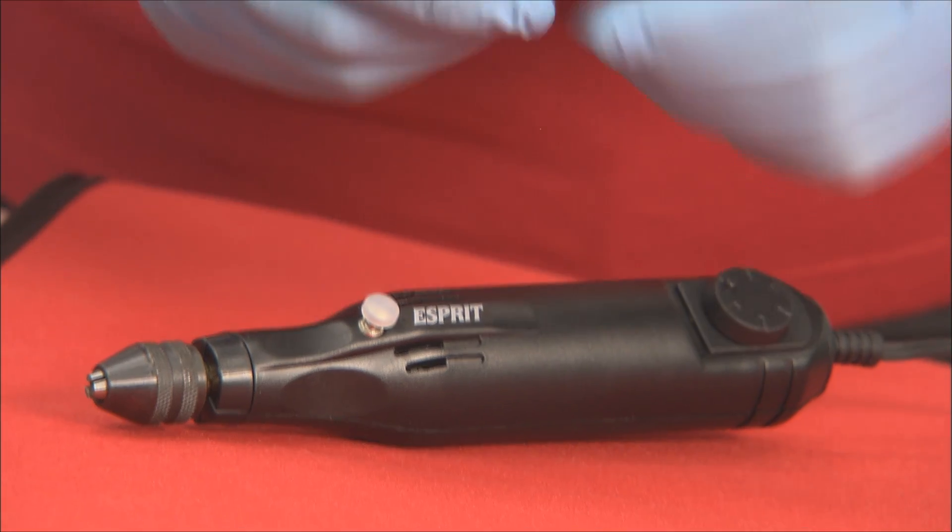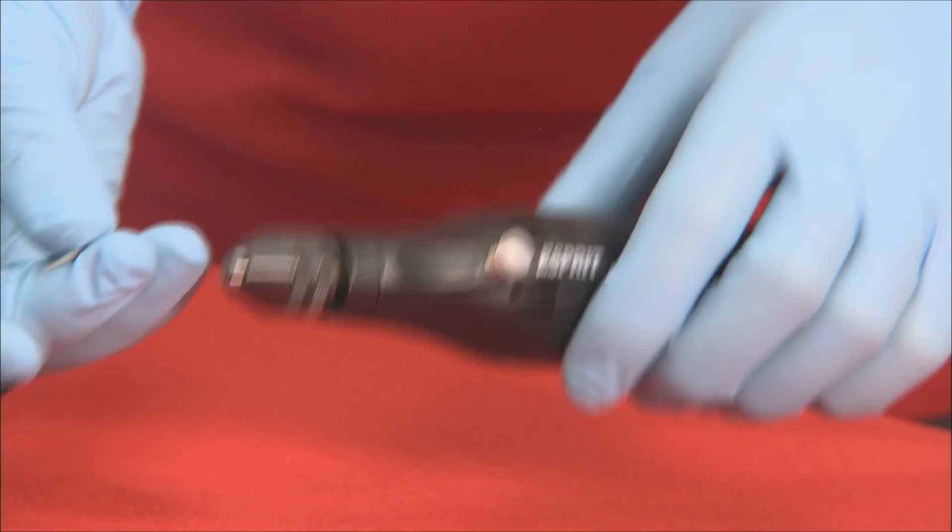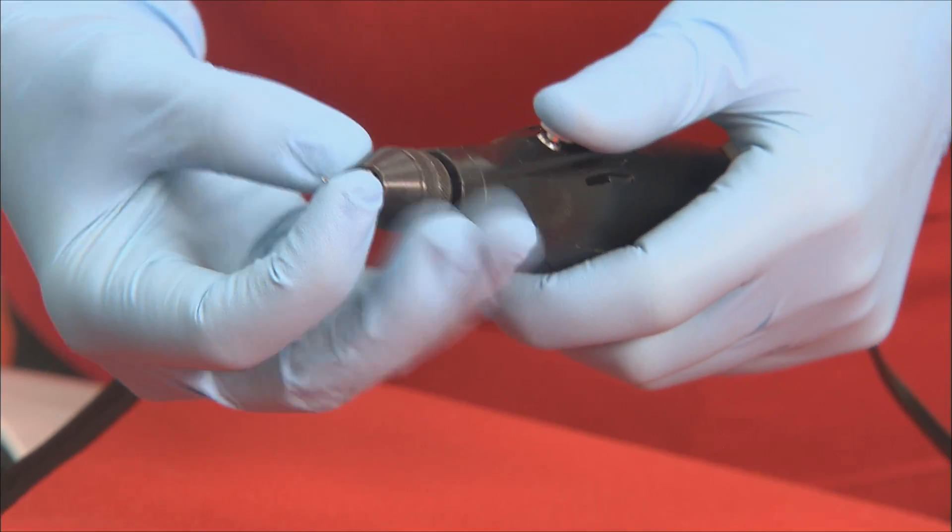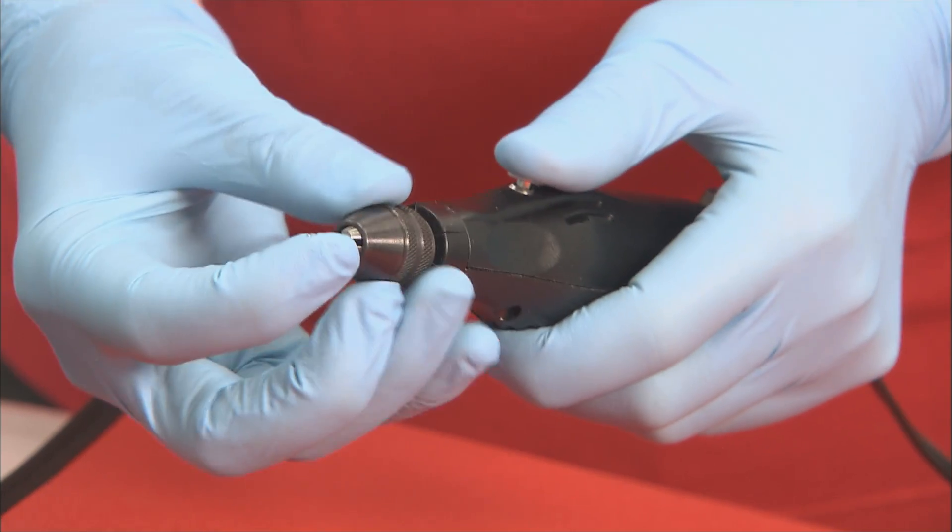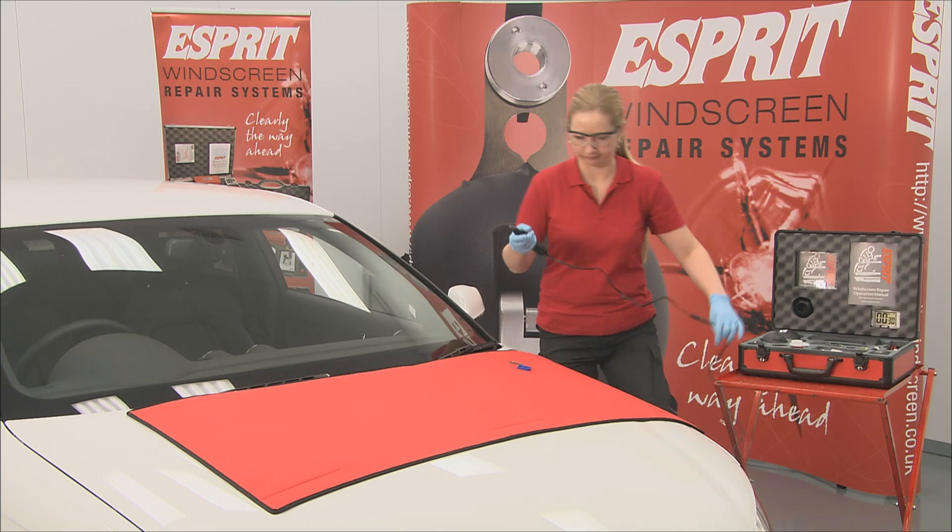When using the drill, the one millimetre blue burr should be selected. It's inserted into the chuck and tightened using the locking button. Eye protection should be worn during drilling and resin operations.